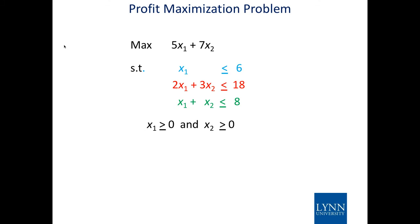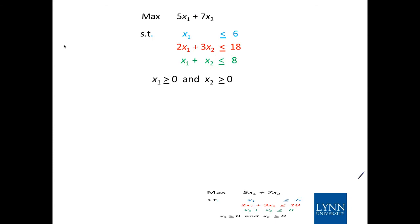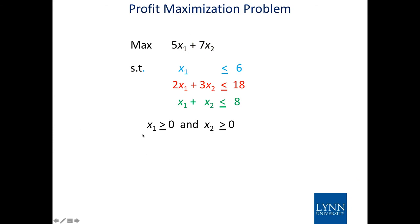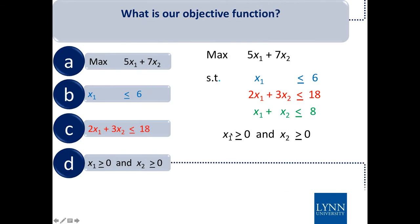x1 less than or equal to 6 means you can't sell more than six because you only have six iPhone cases. 2x1 plus 3x2 less than or equal to 18 represents the physical space — the iPhone takes up two square inches, Samsung Galaxy three square inches, with only 18 square inches of counter space. The last constraint, x1 plus x2 less than or equal to 8, represents how much each costs — you have 8 dollars to spend.